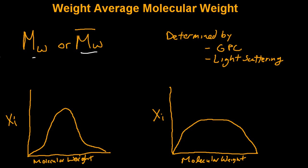In this calculation, larger chains are weighted relative to smaller ones. The larger chains make a larger contribution to the overall value. So as a result, the weight average molecular weight will always be greater than or equal to the number average molecular weight.